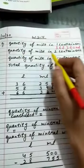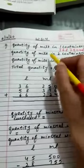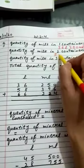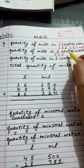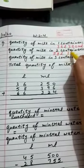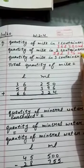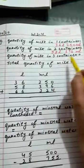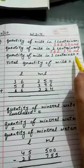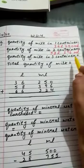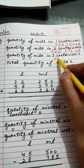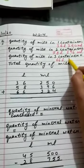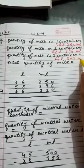Now, quantity of milk in second container. Second container में कितनी quantity given है? 58 liter 396 milliliter. Now, quantity of milk in third container. 66 liter 324 milliliter.